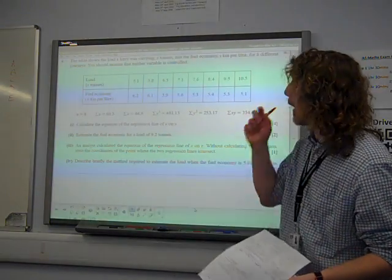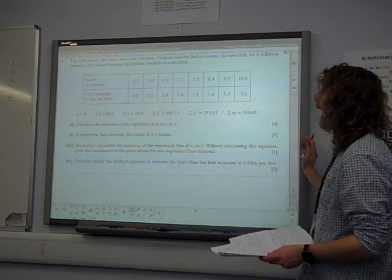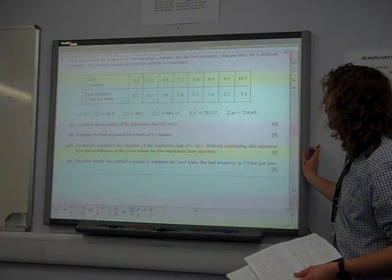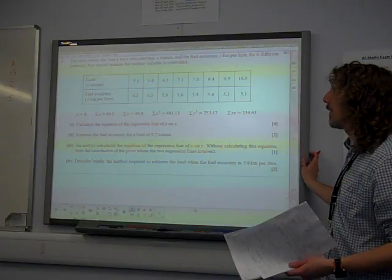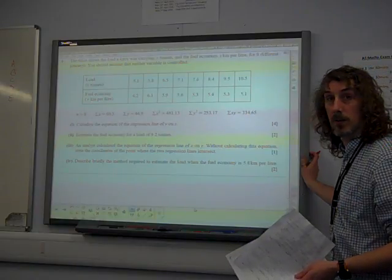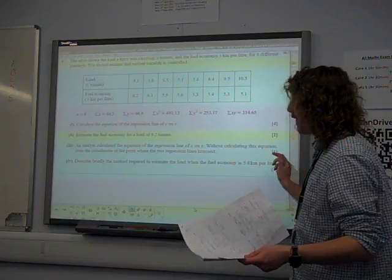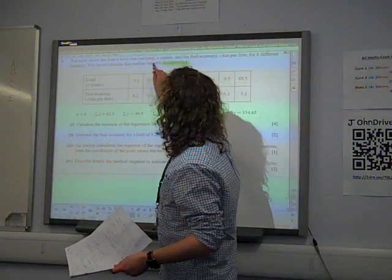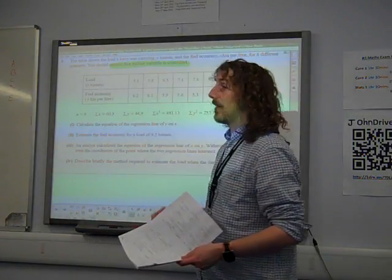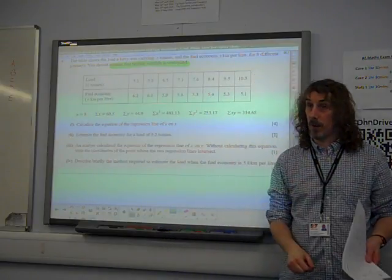So question four, the table shows the load a lorry was carrying, x tonnes, and the fuel economy, y kilometres per litre, for eight different journeys. You should assume that neither variable is controlled. That statement is actually quite important, it's just kind of dropped in there, but it's going to be quite important later on in this question.